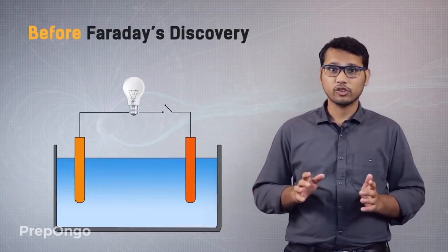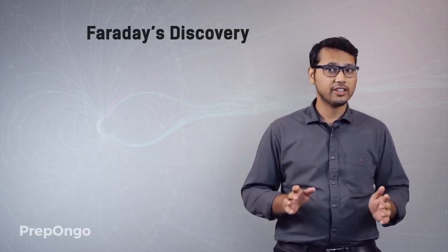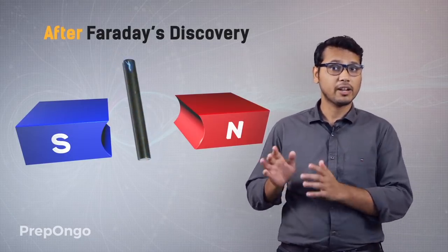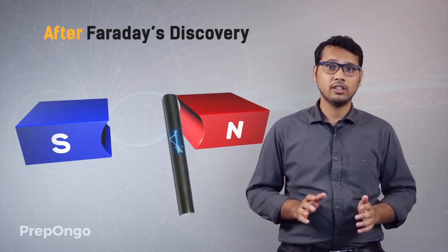Hello everyone. We had seen in a previous video that before the discovery of Faraday, electric current was only being produced by using chemical reactions. But after his discovery, he found a very simple method to produce current just by moving a conductor in a magnetic field. This laid the foundation for making the electric generator, which converts mechanical energy into electrical energy. In this video we'll be learning about the generator and how it works.